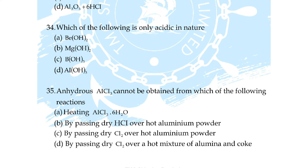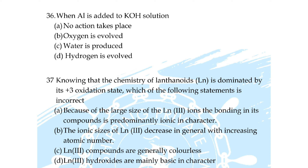Question number 34: which of the following is only acidic in nature? Correct answer is option C. Question number 35: anhydrous AlCl₃ cannot be obtained from which of the following reactions — option A: heating AlCl₃·6H₂O, option B: passing dry HCl over hot aluminum powder, option C: passing dry Cl₂ over hot aluminum powder, option D: passing dry Cl₂ over a hot mixture of aluminum and CO? Correct answer is option A.